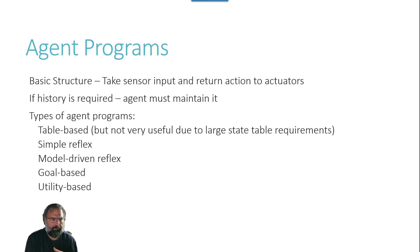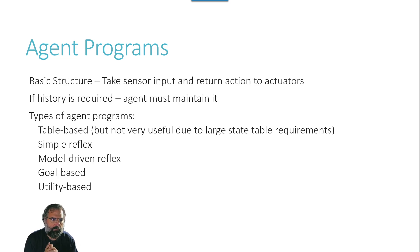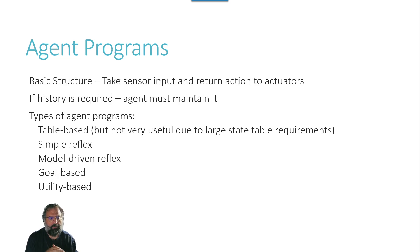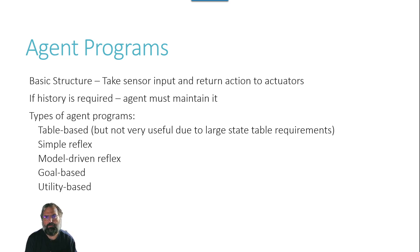An agent program has a basic structure where you take a sensor input and return some action to the actuator. If history is going to be retained, the agent has to keep track of it, or else it will view the world as stateless in a stateful world — and that might work, but probably not too well, because you get yourself in loops. There are types of agent programs. There's table-based, which is not very useful due to the large number of state table requirements — essentially state transitions governed by a table — and it's going to get large quickly.